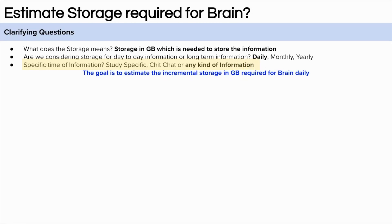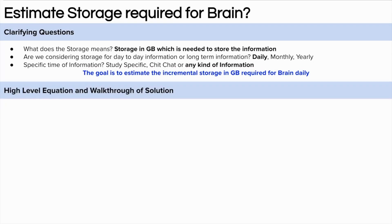The third clarifying question is: what kind of information are we considering? Is it study-specific or any type of information? Here we are not bounded by any such constraint, so we are thinking about any kind of information. If you think we could have asked other clarifying questions, please comment below — that will help other people learn too. Now it's time to form the goal: estimate the incremental storage required for the brain to store one day's information.